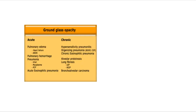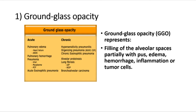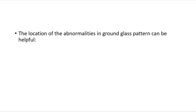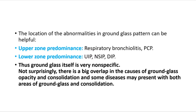Ground glass opacity (GGO) represents partial filling of the alveolar spaces with pus, edema, hemorrhage, inflammation, or tumor cells. The location of abnormalities in ground glass pattern can be helpful: upper zone predominance suggests respiratory bronchiolitis or PCP; lower zone predominance suggests UIP and NSIP/DIP. Ground glass itself is very non-specific, and there is significant overlap in causes of GGO and consolidation.